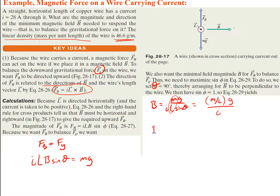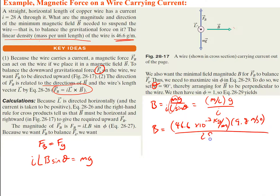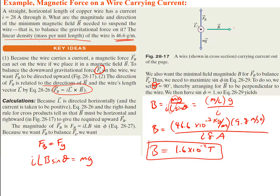Plugging in our values: 46.6 times 10 to the negative 3 kilograms per meter, times 9.8 meters per second squared for g, divided by the current of 28 amps. Our value for the magnetic field is 1.6 times 10 to the negative 2 teslas. That turns out to be about 160 times the strength of Earth's magnetic field.